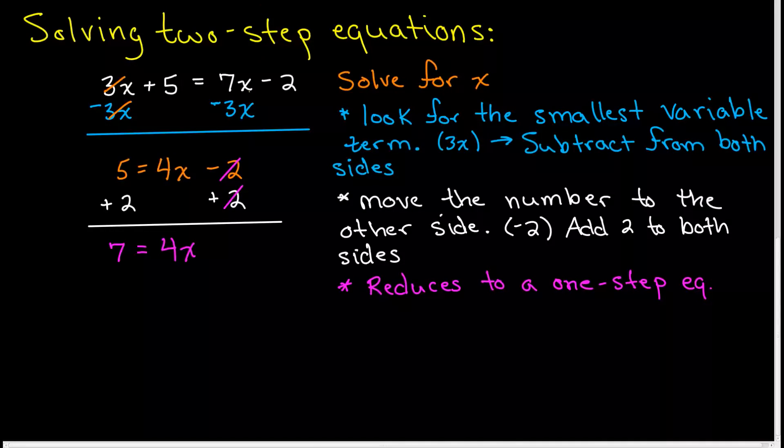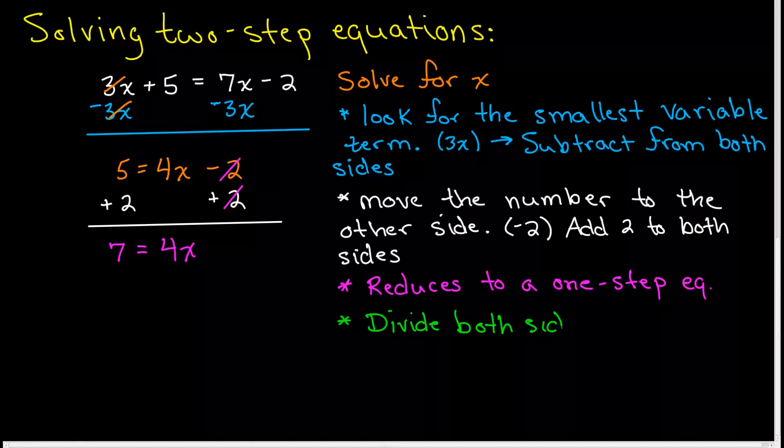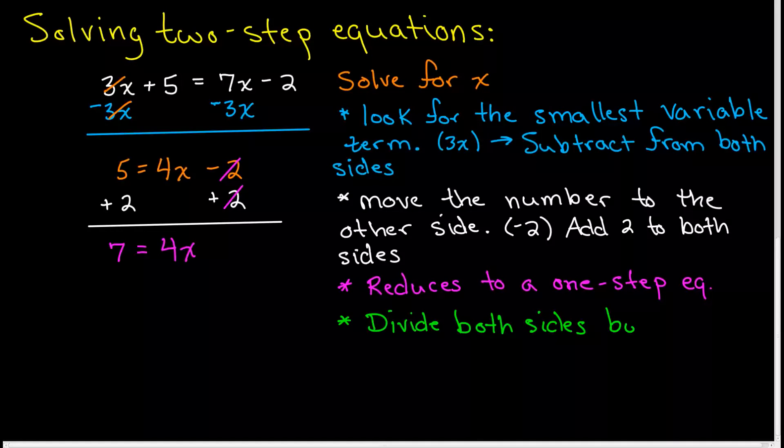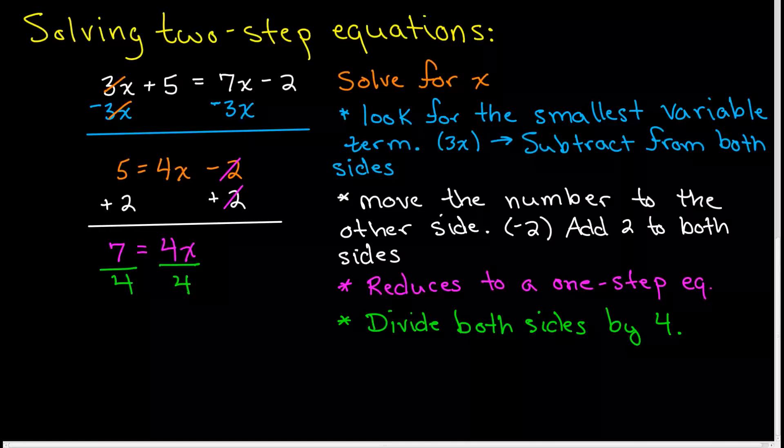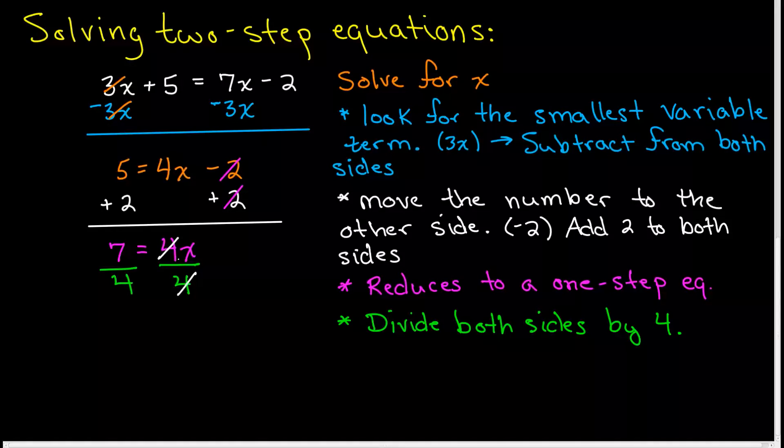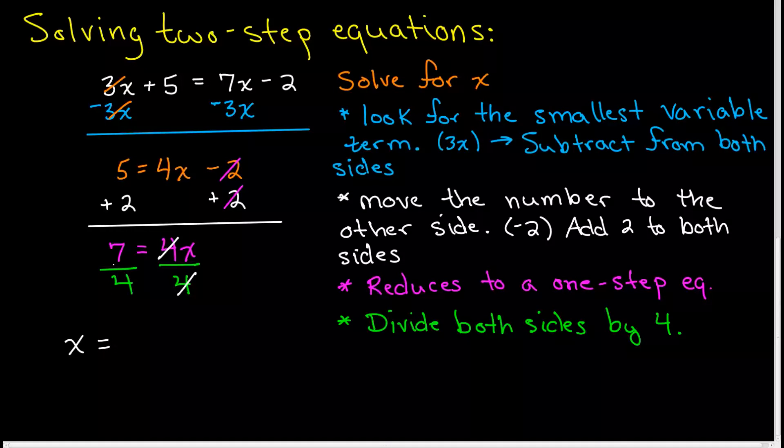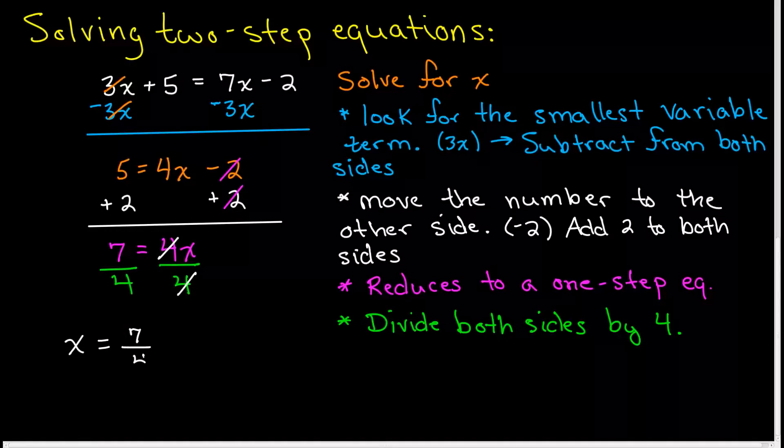We're going to divide by whatever is multiplying our variable. 4 is multiplying x, so we're going to divide both sides by 4. When we do that, these 4s cancel each other out. 4 divided by 4 is 1, so we'll have 1x or just x. Our answer: x is equal to 7 divided by 4.